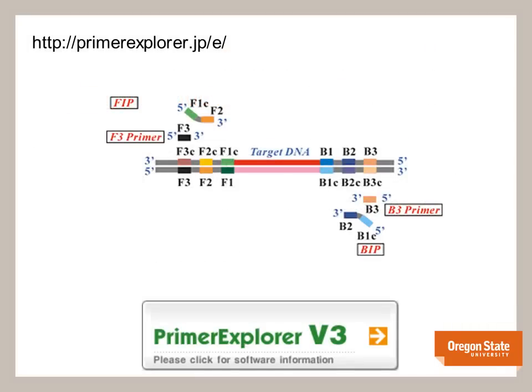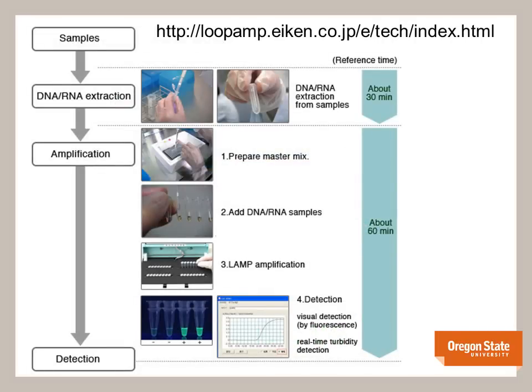Our LAMP primers were designed using Primer Explorer V3. This program is available free of charge on the EIKEN website. This program precludes primer pairs expected to form hairpins or primer dimers. We designed four LAMP primers, which included two inner primers, also called FIP and BIP, and two outer primers, F3 and B3. On the EIKEN website, a schematic outline of the LAMP assay is provided.